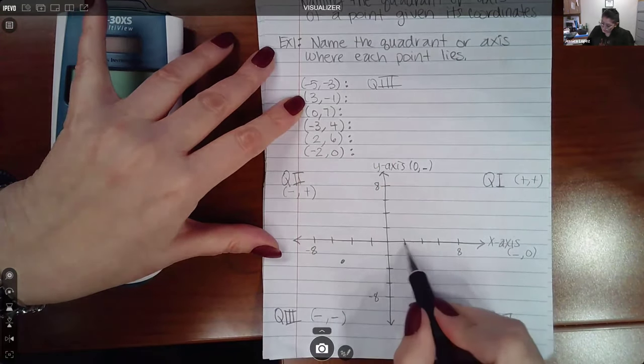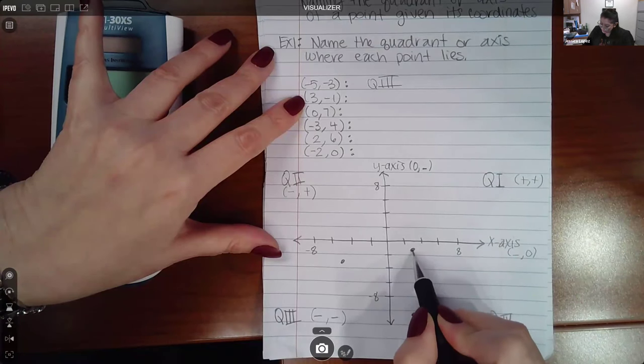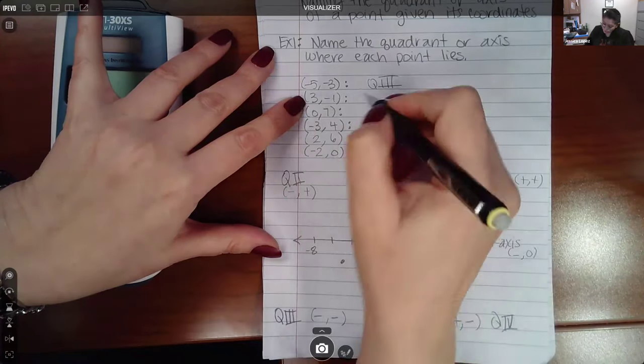Here we have a positive x value and a negative y value, so it is going to be in quadrant four.